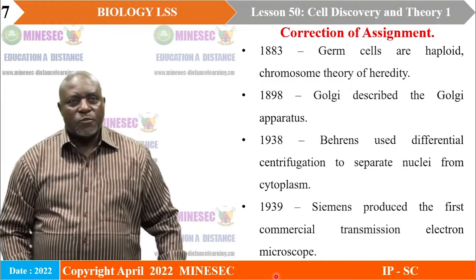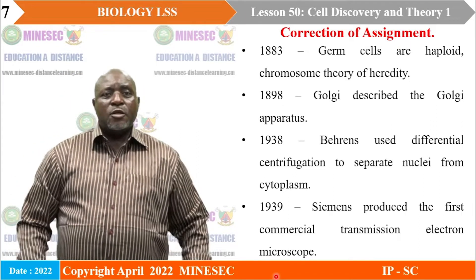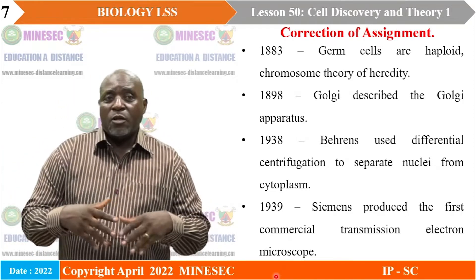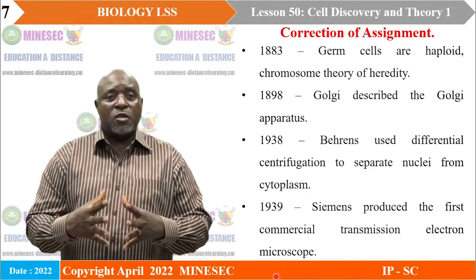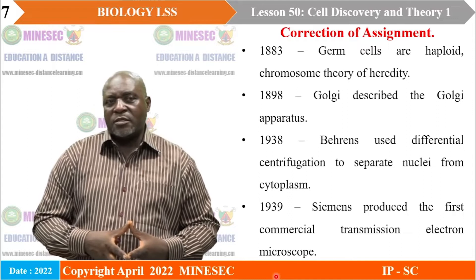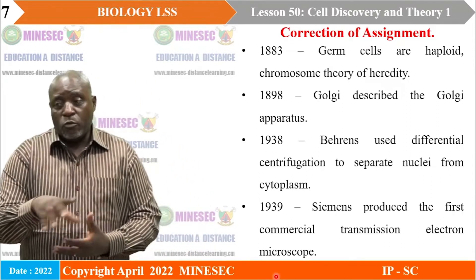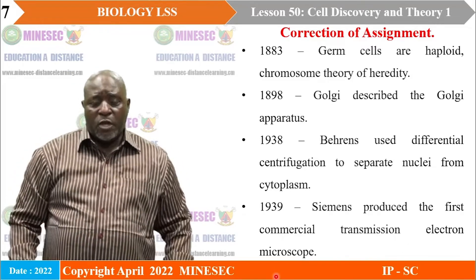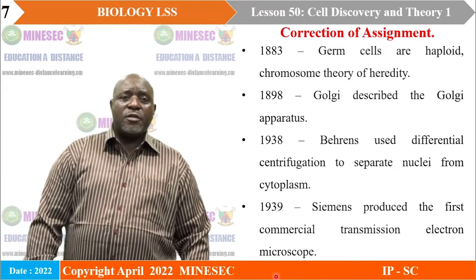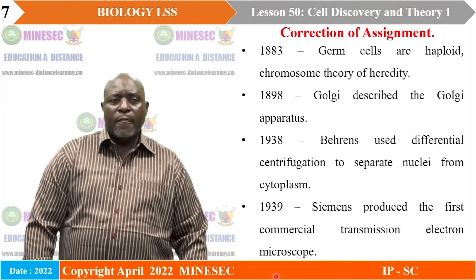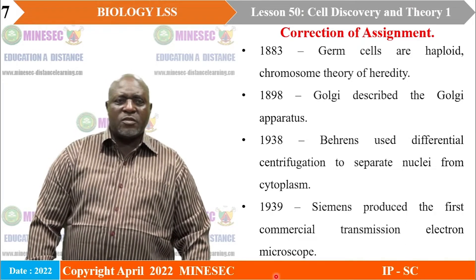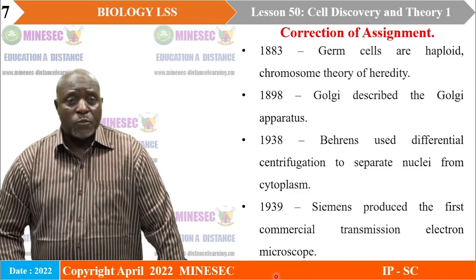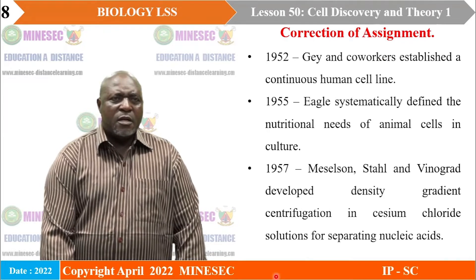Differential centrifugation was used to separate nuclei from the cytoplasm. For example, if you crush cells from a hibiscus leaf and use differential centrifugation, you can separate the nucleus and the mitochondria — isolated nuclei. In 1939, Siemens produced the first commercial transmission electron microscope, which can magnify objects greatly so you can see very tiny things. In 1952, Gray and his co-workers established a continuous human cell line, bringing a lot of information about the human cell.